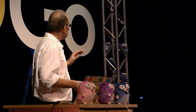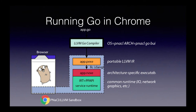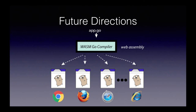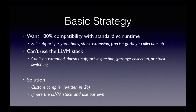So the idea is: you take your Go program, run our compiler, generate an intermediate file, ship that to your browser, and it can run there trusted. In the future, this will probably be WebAssembly — a cross-platform intermediate representation. But I'm going to talk about the native client work that we're doing.